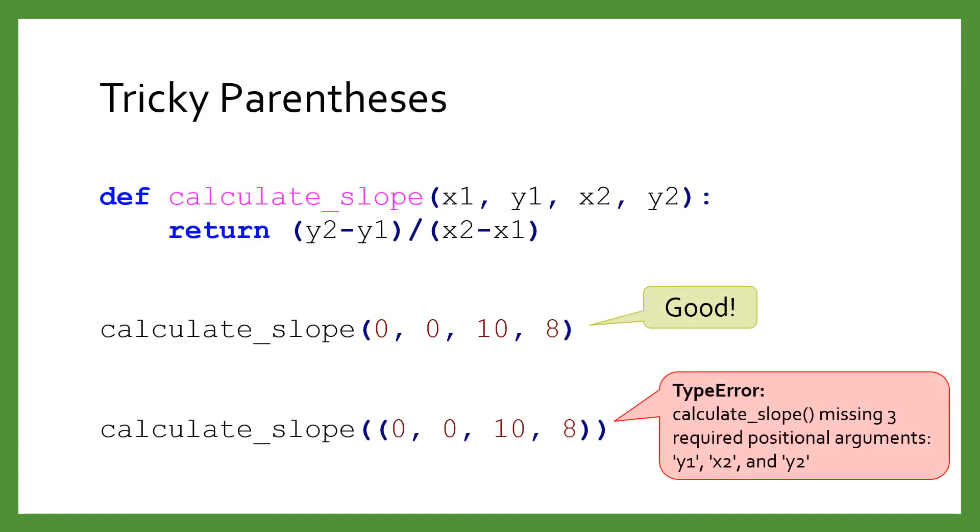Another common mistake is to use redundant parentheses to accidentally create tuples. This happens very easily in function calls. Notice the redundant parentheses here pass in a tuple of four numbers to this function, instead of passing the four numbers directly. Parentheses may seem like a harmless addition to your code, but they can dramatically change its meaning.